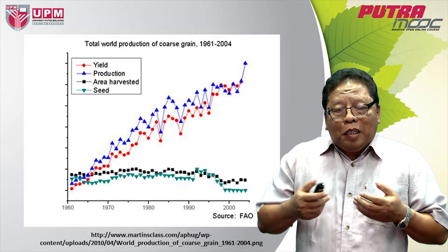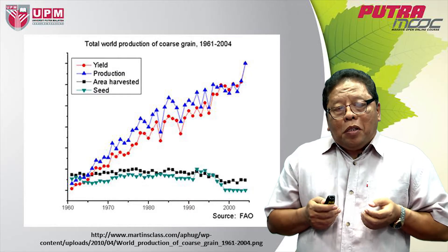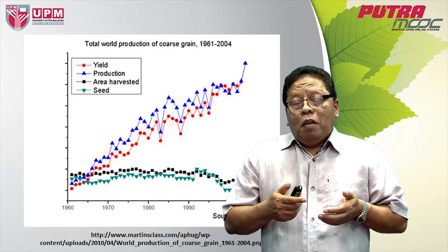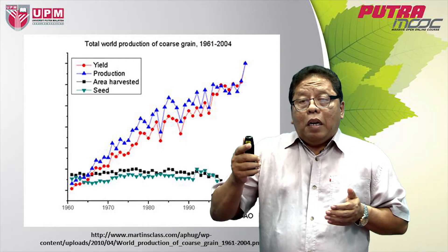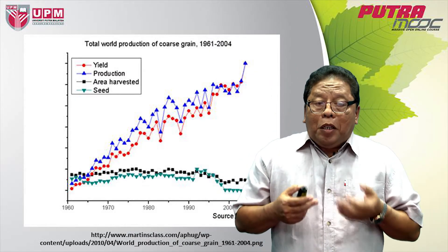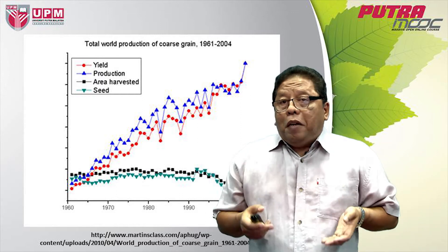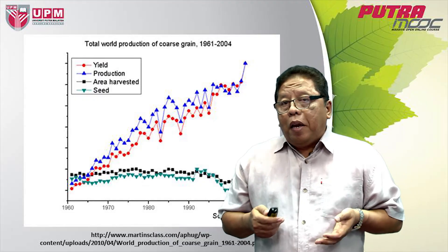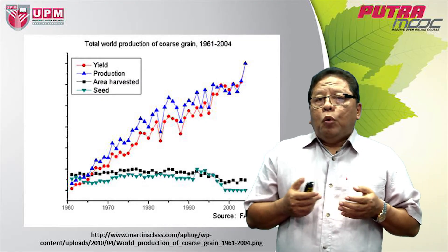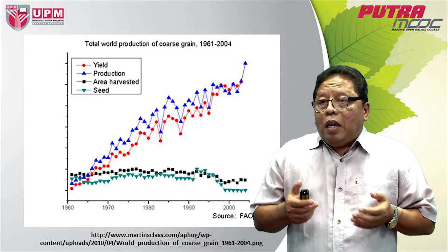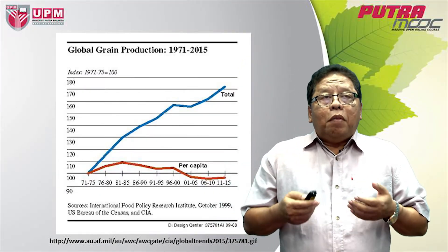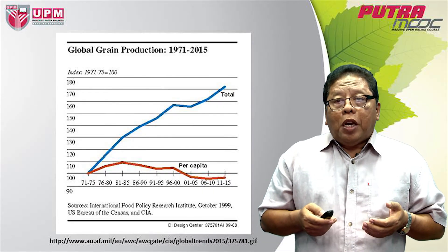However, there is a big increase in production. How does this happen? What is the secret? The answer is, if you look at the red line, it shows the yield or productivity. Year by year the red line is increasing, which means human beings have successfully increased the productivity of the land. At one time, the yield of rice in most countries was about 2 tons per hectare, but now it is possible to achieve yields of even 10 tons per hectare. This happened because human beings are capable of improving through science and technology.